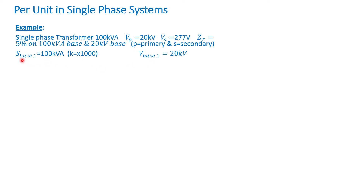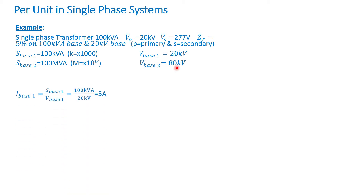Let's pick Base 1: apparent power S_base1 = 100 KVA. Remember, K means times one thousand, so KVA is kilo-volt-amperes. Also, KVA_base for the primary is 80 KVA and V_base1 = 20 kV. Then let's pick Base 2: S_base2 = 100 MVA — M means mega, so times 10 to the sixth — and V_base2 = 80 kV. To calculate I_base1: S_base1 divided by V_base1 = 100 KVA divided by 20 kV = 5 amps.